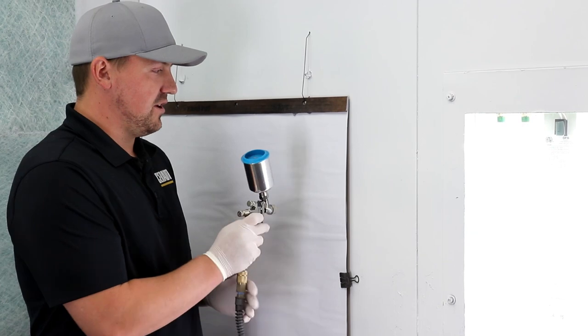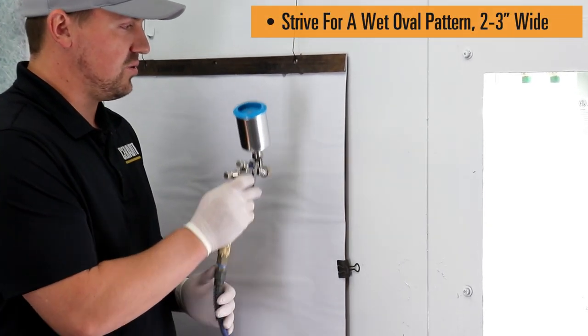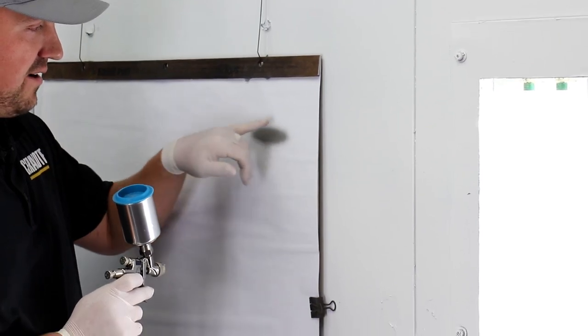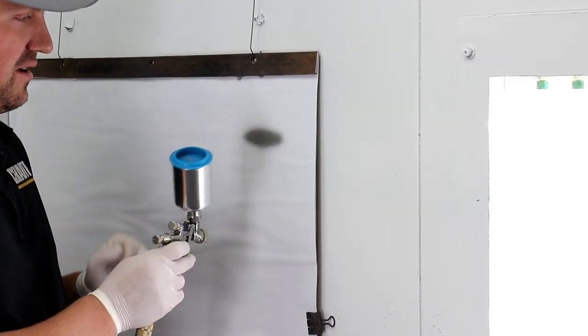So we're looking for a nice even oval about two to three inches wide. We want to see this coating wet out nicely, but we don't want to see it push or muddle.